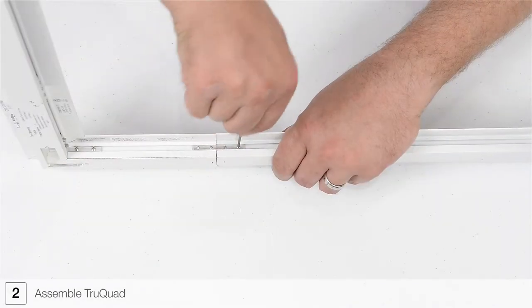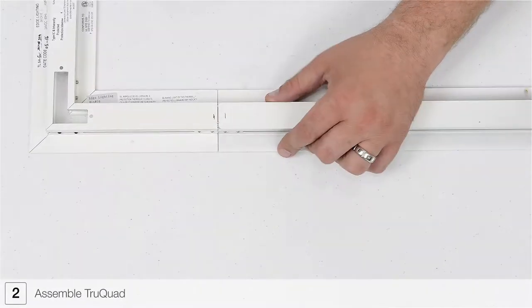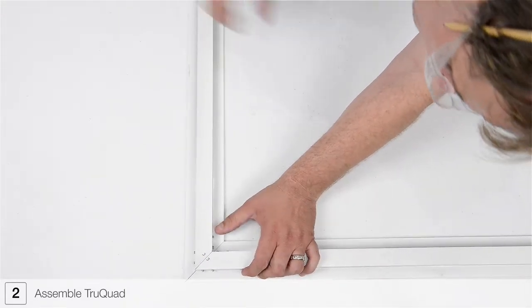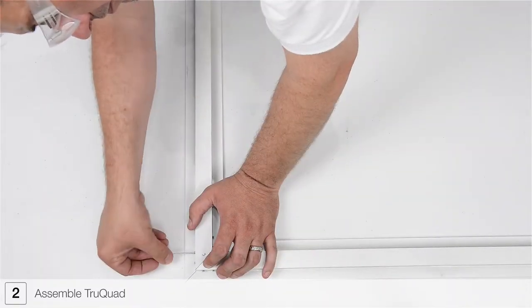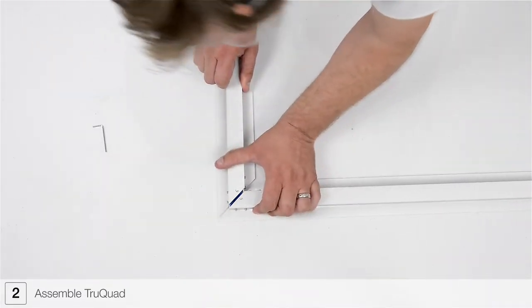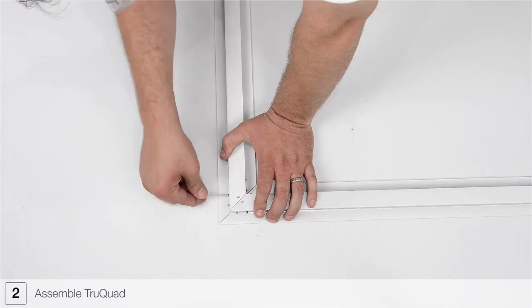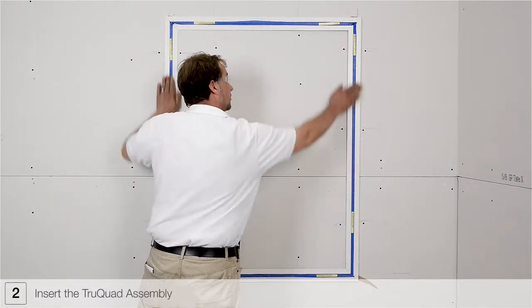Assemble the TrueQuad configuration by attaching the L-shaped power channel connector to one of the straight channel sections. Join the mitered corners of the straight channel sections using the included joiner bars. Repeat for additional mitered corners as necessary. Insert the picture frame assembly.